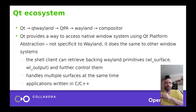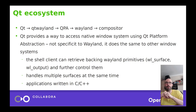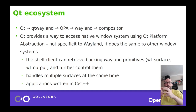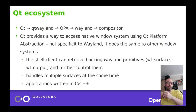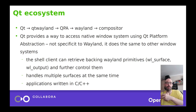Looking at each toolkit: for Qt and Qt Wayland we have the Qt Platform Abstraction, which is not specific to Wayland — it works similarly for other windowing systems like Mac or Windows. The shell client can retrieve any backing Wayland primitives we're interested in, like the Wayland surface and Wayland output, in order to control them. Qt can handle multiple surfaces at the same time internally for repainting, and applications written in C and C++ make it probably the ideal use case for implementing the shell client.